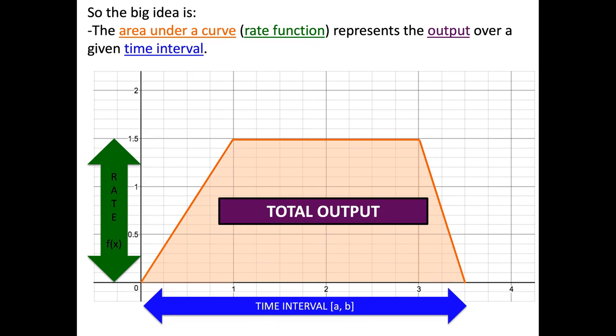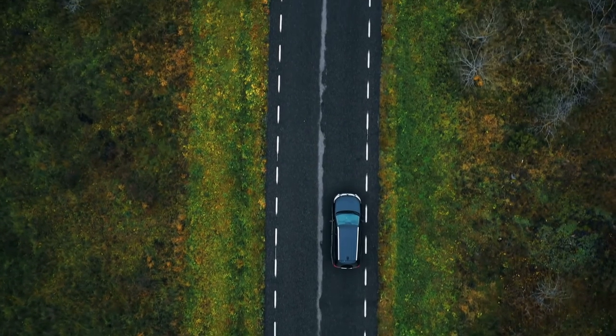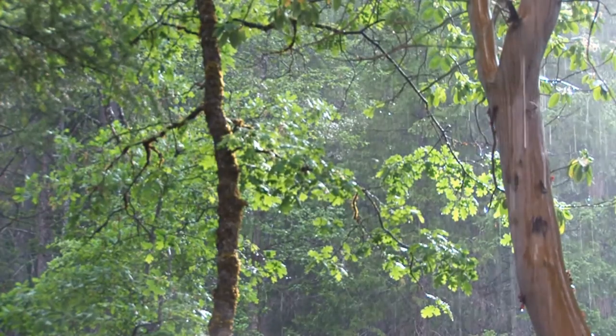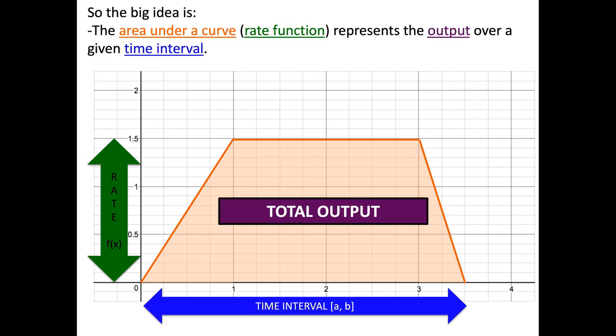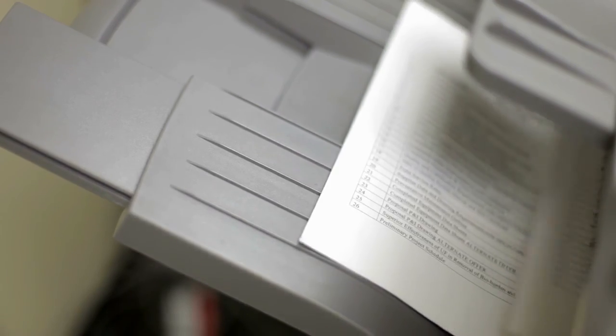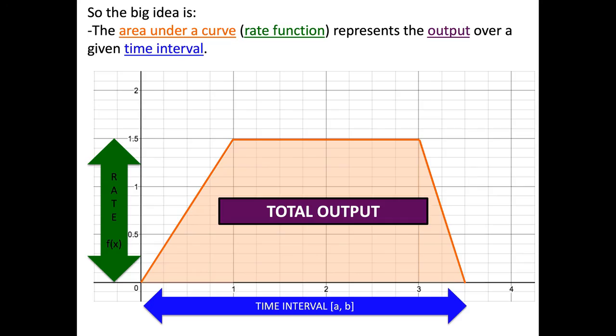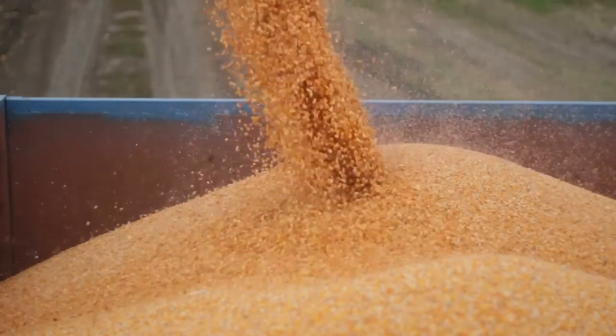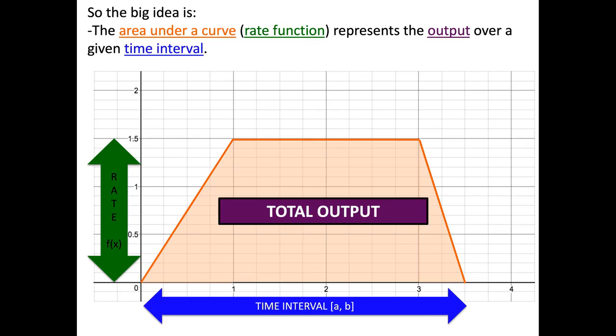So you've seen two examples now. One was distance. The other one was rain. But these sort of output questions can be any context. It could be, how many copies does the copier make? How much grains of sand has been pumped out of the machine? It can be how many people have entered or left a building. So the total output is the total result you're looking for.